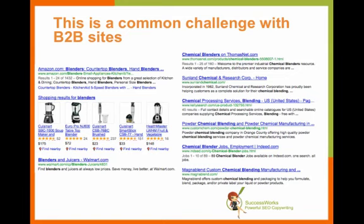The second challenge that can also happen is that these folks might be using key phrase research tools. They will type in 'chemical blender' and think, 'wow, there is not that much traffic from chemical blender — maybe we shouldn't use this, maybe we should use blenders instead because look at all this traffic.' Again, the challenge is that blenders get a lot more traffic, but those folks aren't looking for chemical blenders — they're looking for consumer blenders. So they end up optimizing the site for the wrong term and don't get the traffic and sales that they need to see.